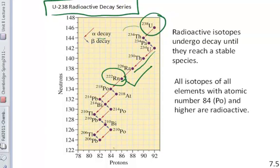The decay continues all the way down to lead, which has an atomic number of 82, and lead is stable. Lead-206 is stable, and the radioactive decay series ends there.